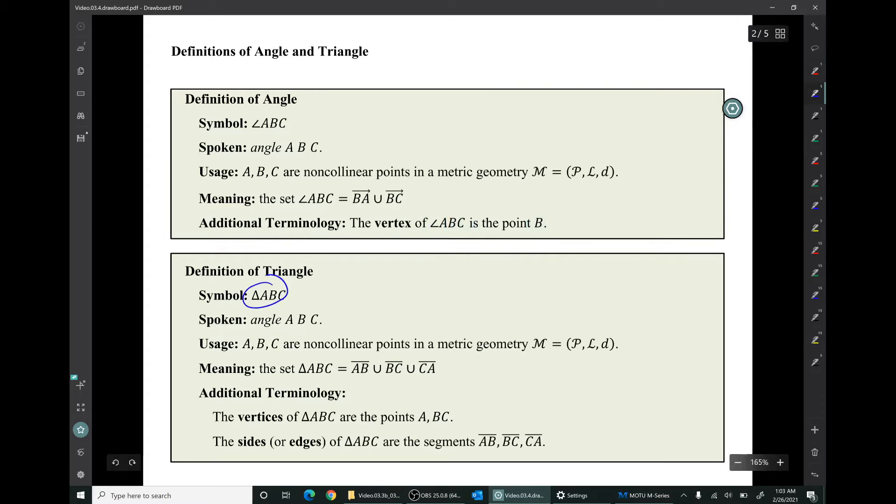Let's discuss the definition of triangle. This symbol is spoken triangle ABC. And the usage is the same as the usage for the angle symbol. That is, ABC have to be non-collinear points in a metric geometry. And what that symbol means is the following set: Triangle ABC is the union of these three line segments. Some additional terminology: the vertices of the triangle are those points ABC. The sides or edges of the triangle are these segments.